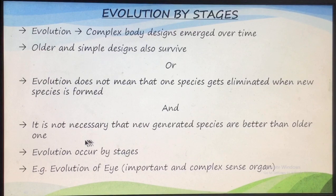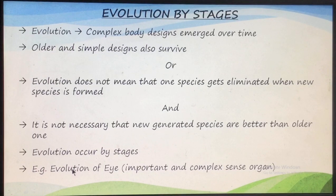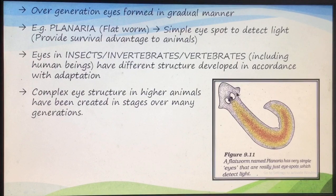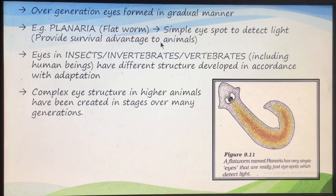Evolution occurs by stages. Two popular adaptations which indicate that evolution has taken place are the evolution of the eye. The eye is a very important and complex organ. For example, planaria — which is also known as a flatworm and belongs to phylum Platyhelminthes — has a very simple eye, just an eye spot. This eye spot can detect light and gives a survival advantage to the organism.